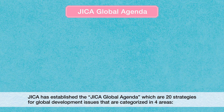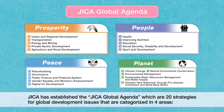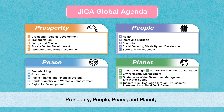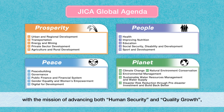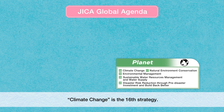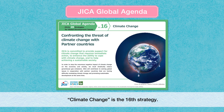JICA has established the JICA Global Agenda, which are 20 strategies for global development issues categorized in four areas: Prosperity, People, Peace, and Planet. With the mission of advancing both human security and quality growth, JICA aims to further increase development impacts through partnerships and co-creation with various partners. Climate change is the 16th strategy.